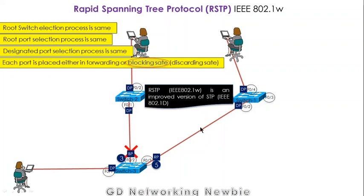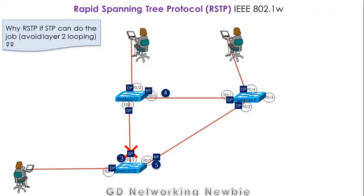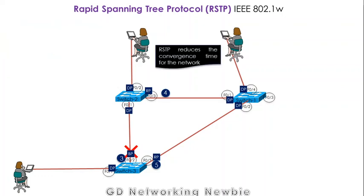The difference is that in RSTP the blocking state is known as a discarding state. Now the question is that if STP can do the same job — which is to avoid Layer 2 looping — then why do we need RSTP? The simplest reason is that RSTP actually reduces the convergence time for the network.